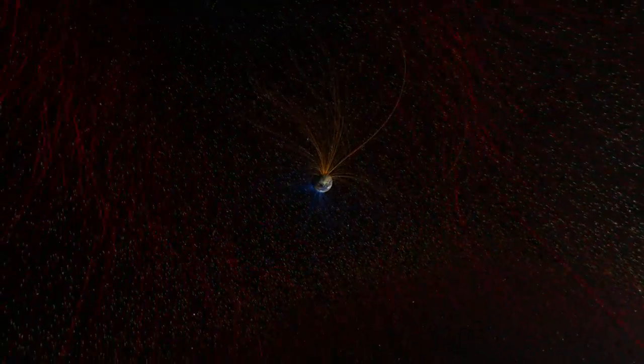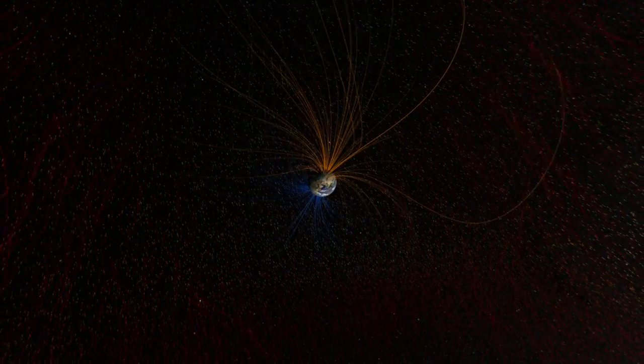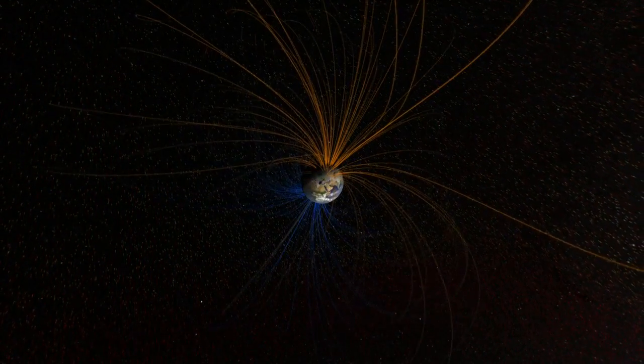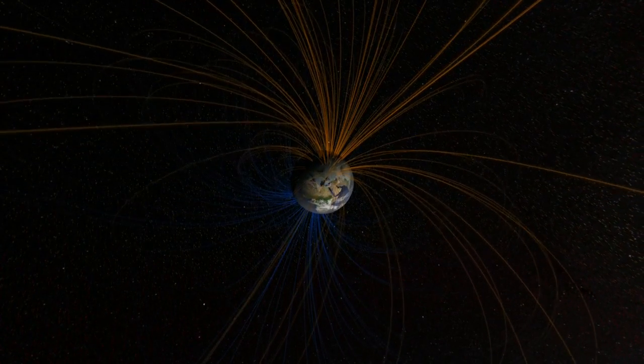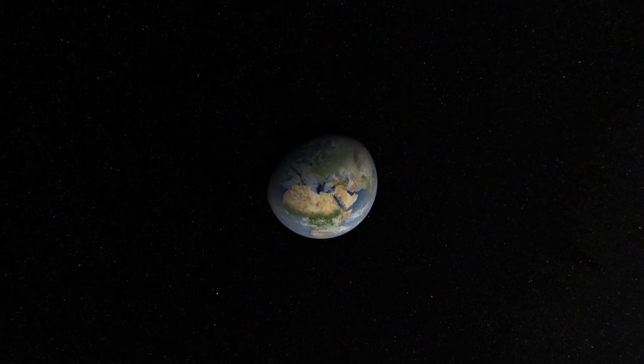In fact, that's just our first line of defense. Much of the solar energy that gets through is reflected back to space by clouds, ice, and snow.